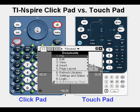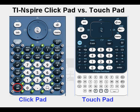Other than being in different locations, the keys are pretty much the same. On the clickpad, you get to the documents menu by pressing Control then the Home key. But on the touchpad, the calculator has its own dedicated documents key at the upper right. On the clickpad, the on/off key is at the lower left, but on the touchpad the on/off key is at the upper right in conjunction with the Home key.